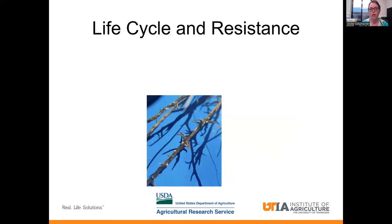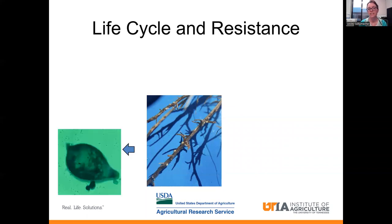So what does this nematode actually look like? If we pull up soybean roots around 30 days, you might see these white dots. Those dots are actually the female worm. She has actually burst through the root surface, and males in the soil have fertilized the females, and within each one of those female bodies, which eventually breaks off from the root system and becomes what we know as the cyst, there are eggs inside.